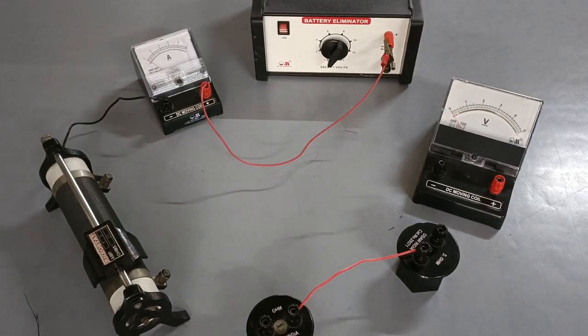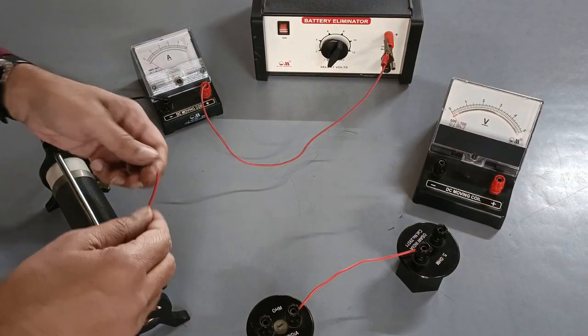Connect the other end of the rheostat as shown with end A of resistor number 1.